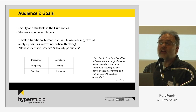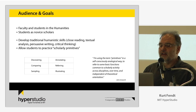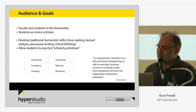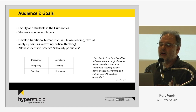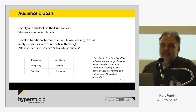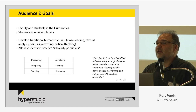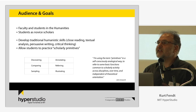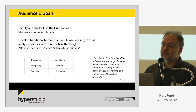We reference quite often John Unsworth, who has talked about the scholarly primitives. Here are several of them listed, including annotation, referencing, illustrating, discovering, and so on. These are the primary tools and skill sets that every humanist uses on a daily basis. We're trying to integrate those into the tools and how we think about the tools.